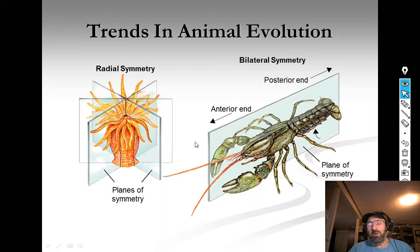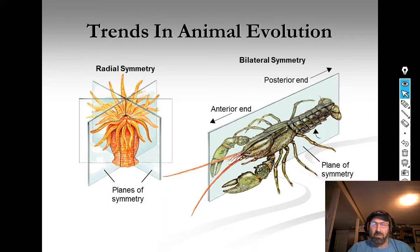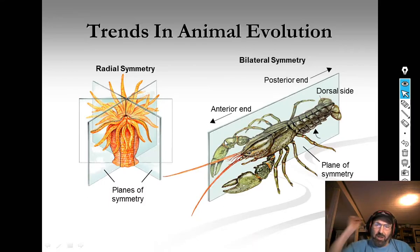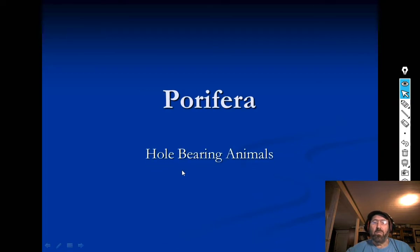A couple of terms you should know: the tail end is called the posterior end, and the head end is the anterior end. We also need to know that the dorsal side is the back — your back is your dorsal side — and your belly side is your ventral side.